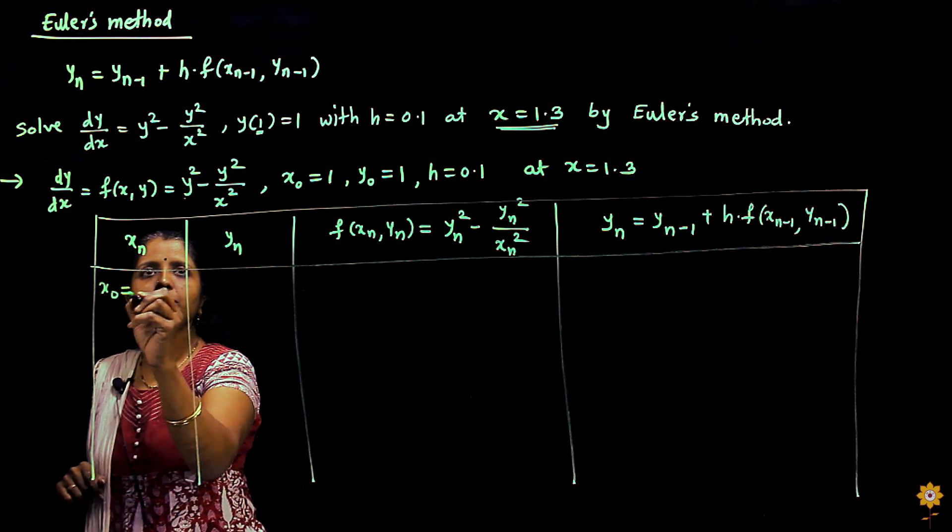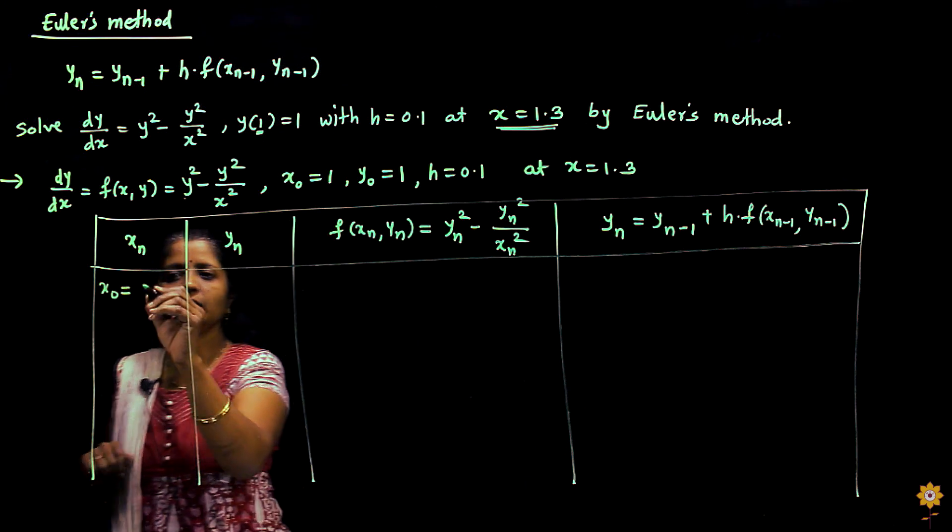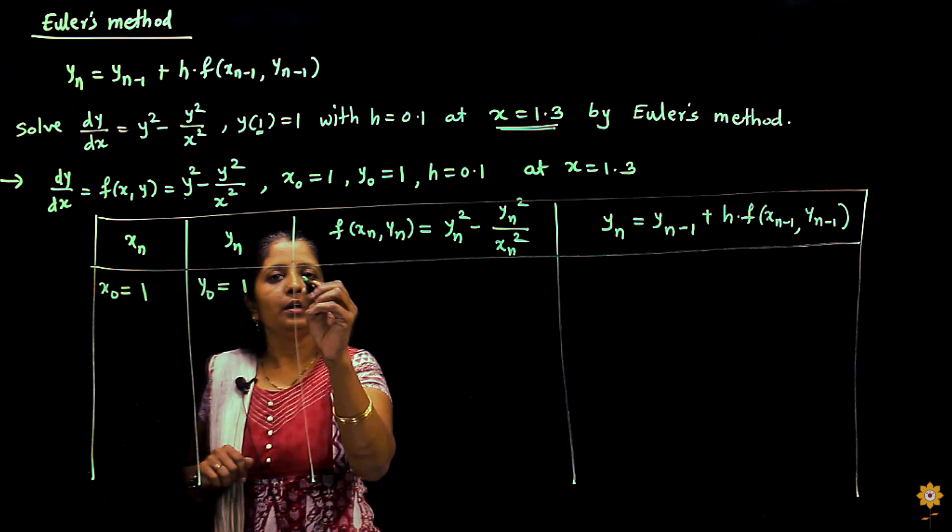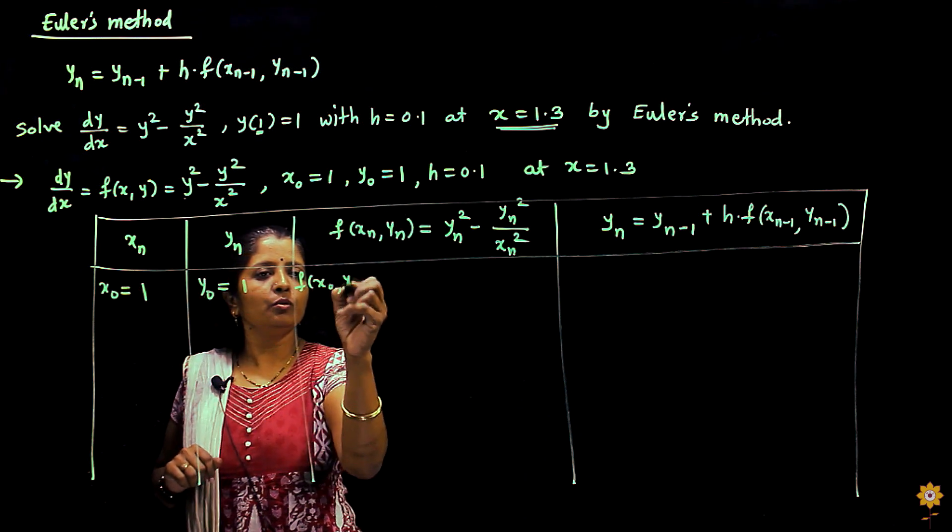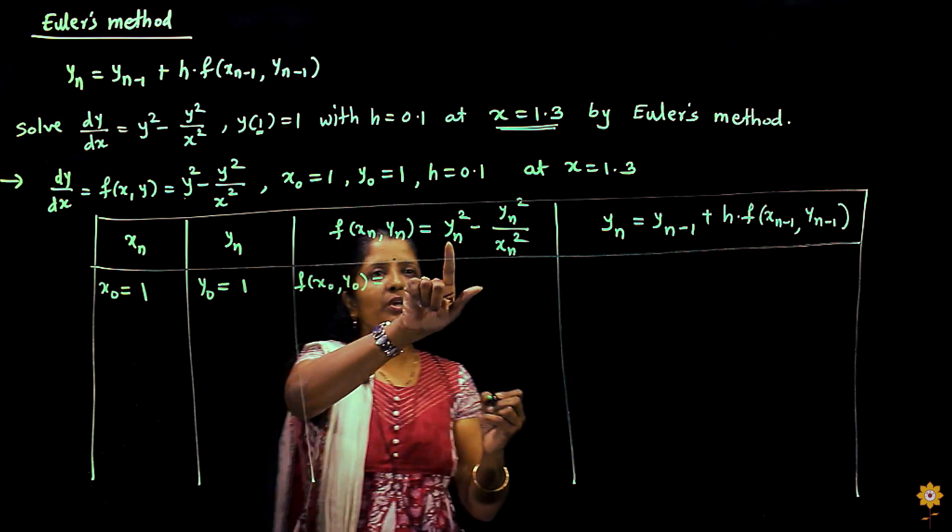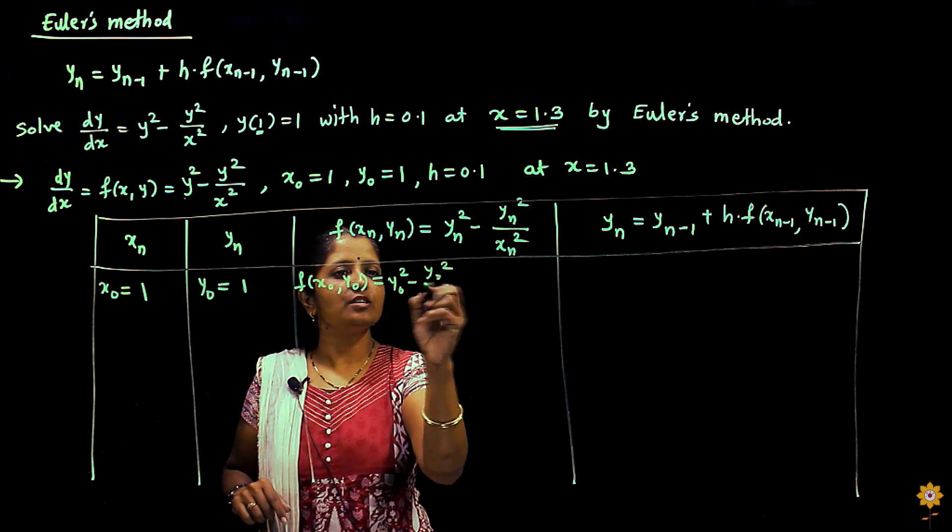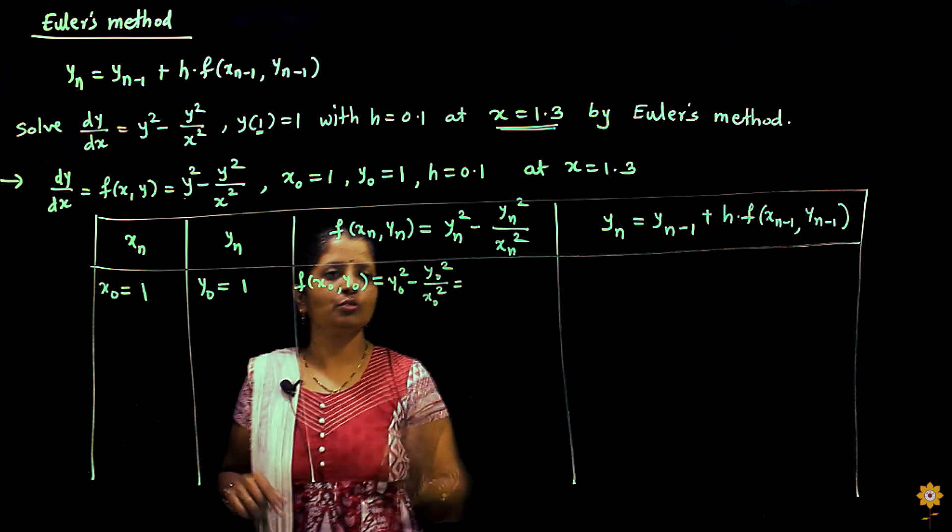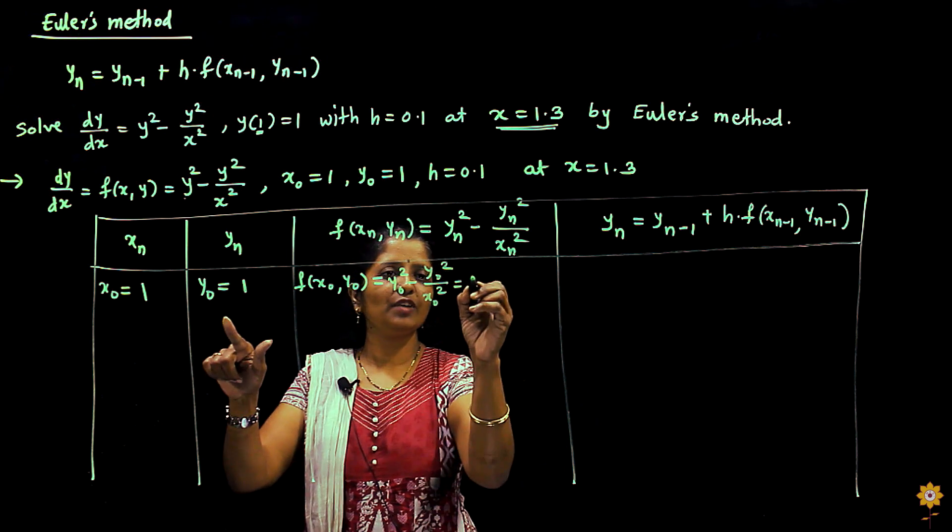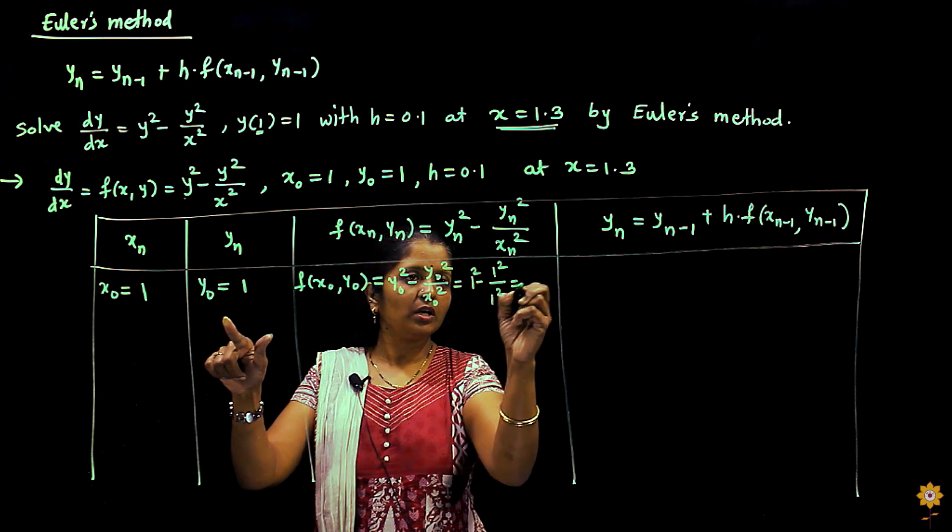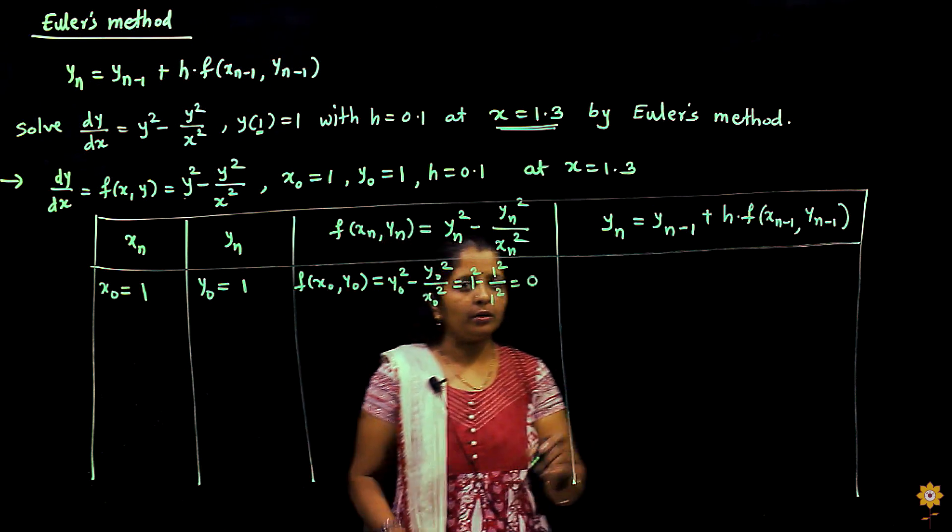Start with x0. x0 is given as 1, y0 is given as 1. Now f(x0, y0), substitute here x0, y0. So it is y0² minus y0²/x0². Substitute both these values: 1² minus 1²/1². So it is 0 over here.